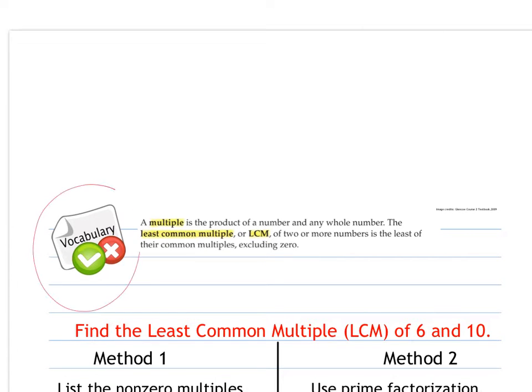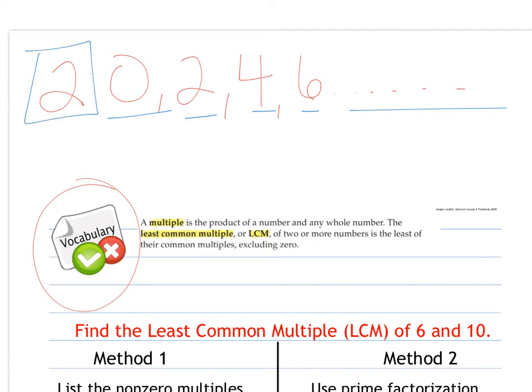A multiple is the product of a number and any whole number. So for example, if we were looking for multiples of 2: 2 times 0 is 0, 2 times 1 is 2, 2 times 2 is 4, 2 times 3 is 6, and so on. So 0, 2, 4, 6, and so on are all multiples of the number 2.